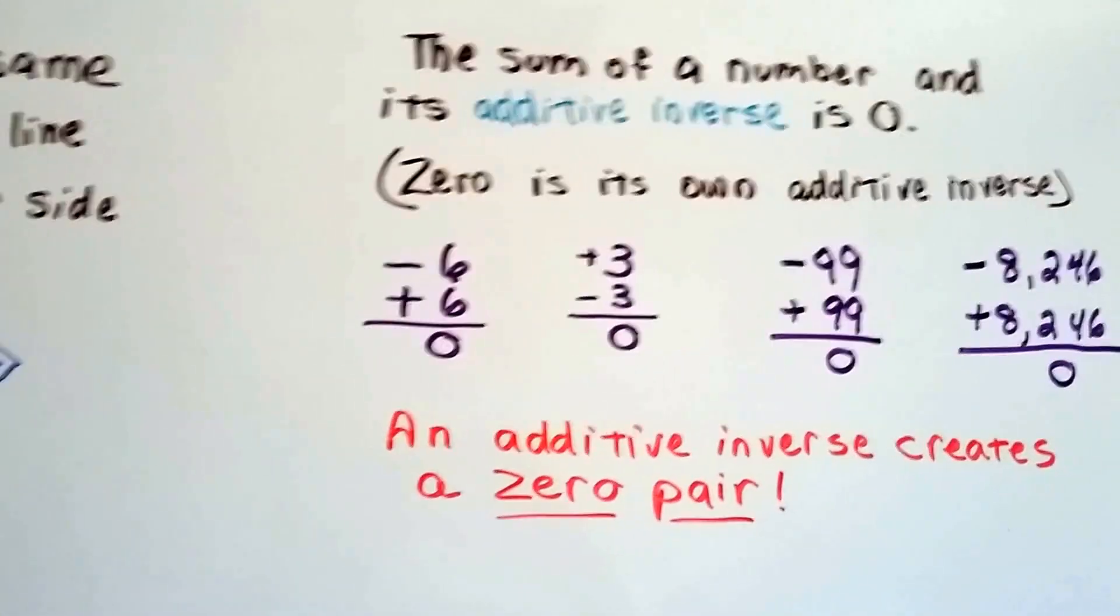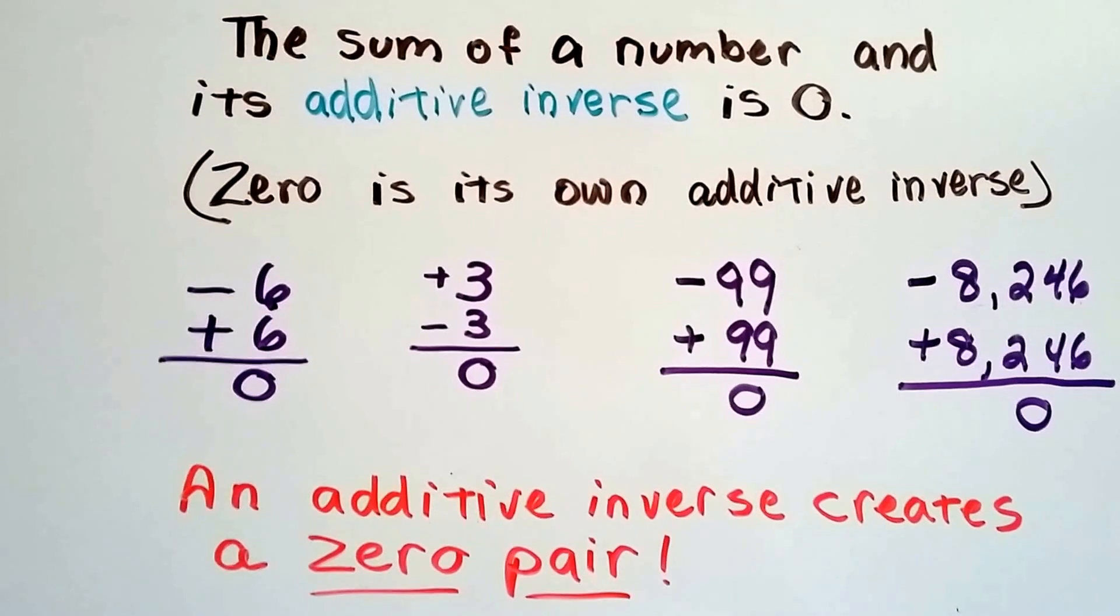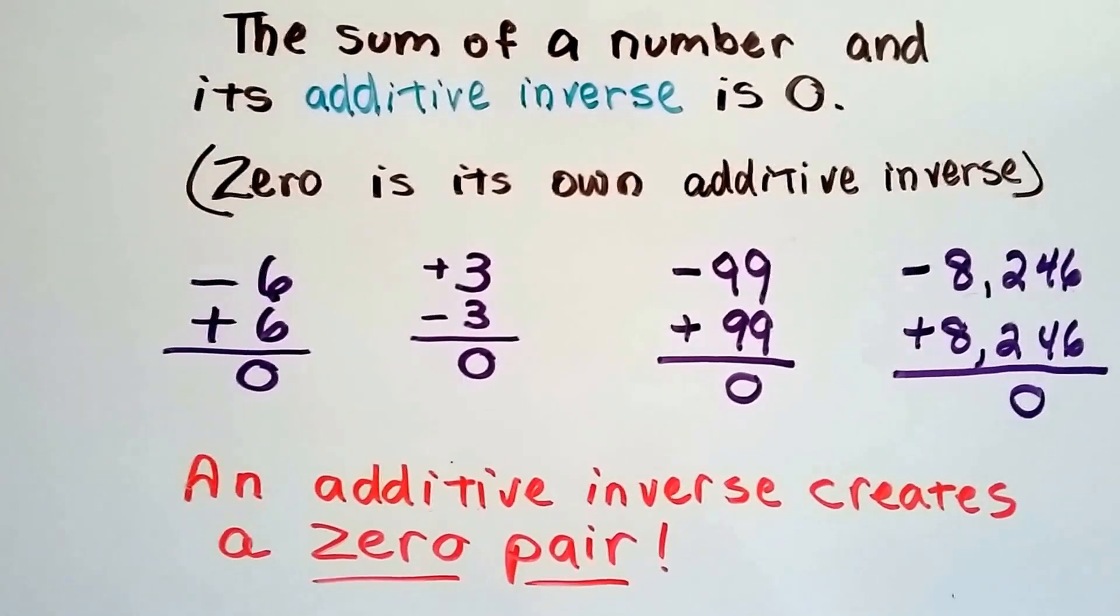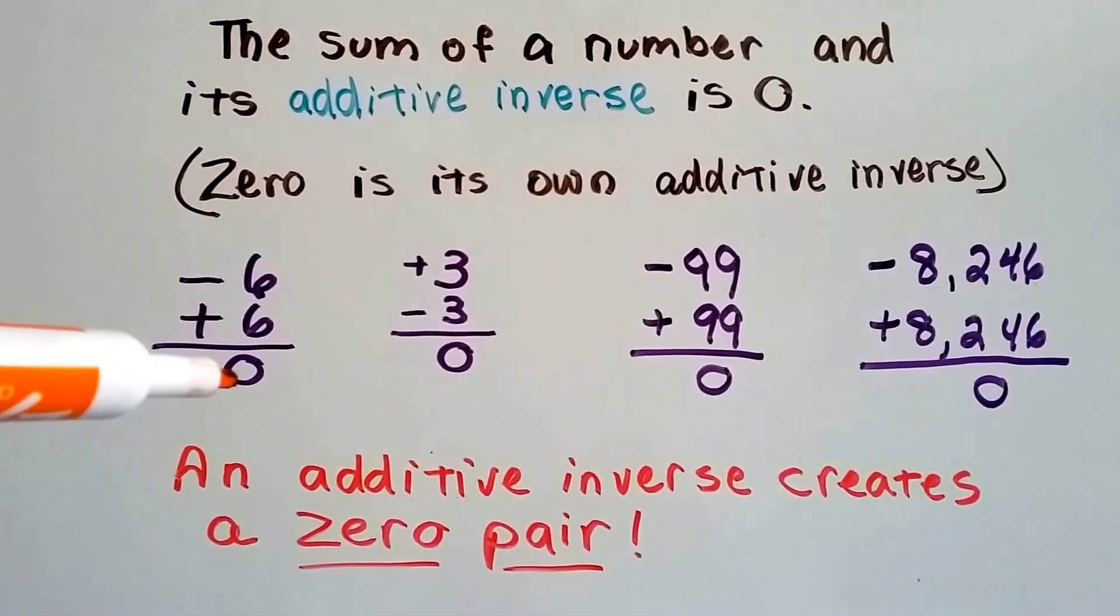The sum of a number and its additive inverse is zero. Zero is its own additive inverse. So we have negative 6 and add positive 6, we're at zero.